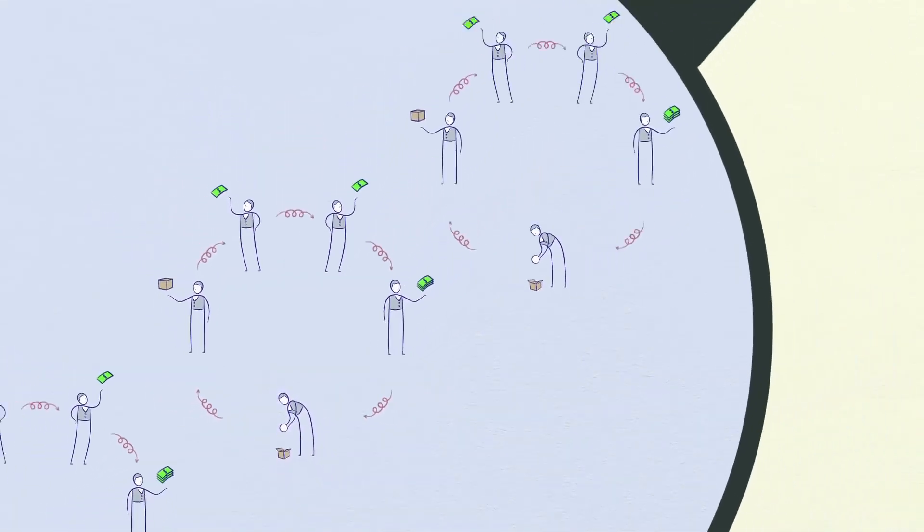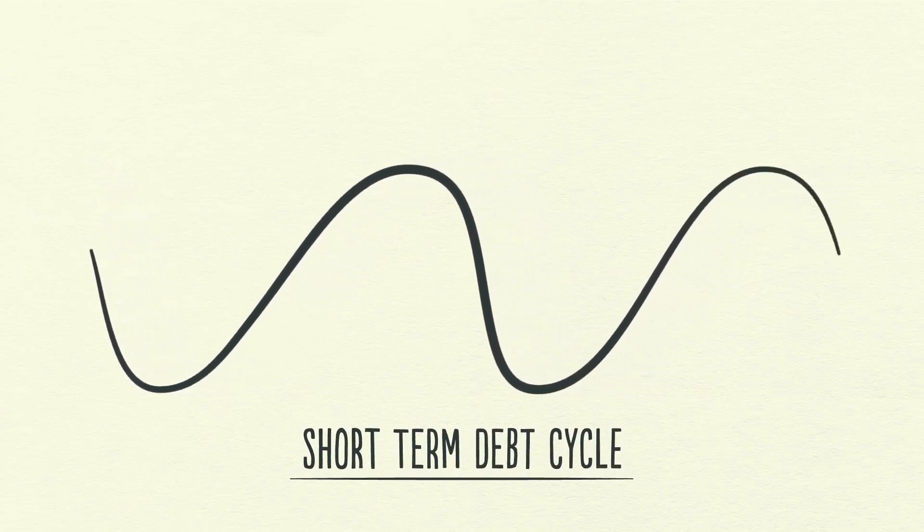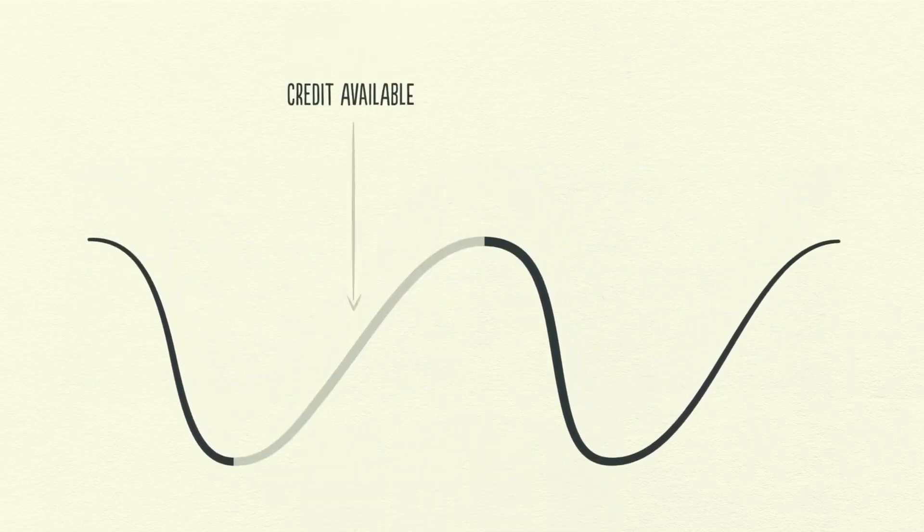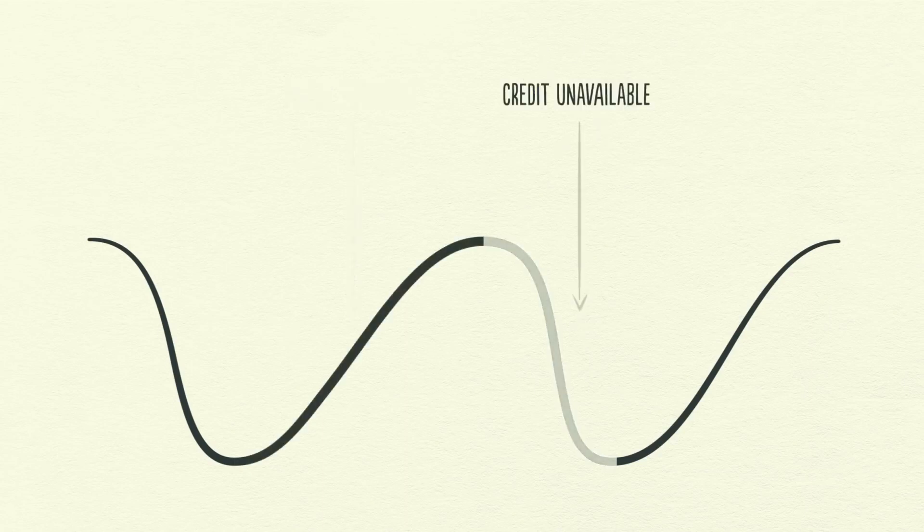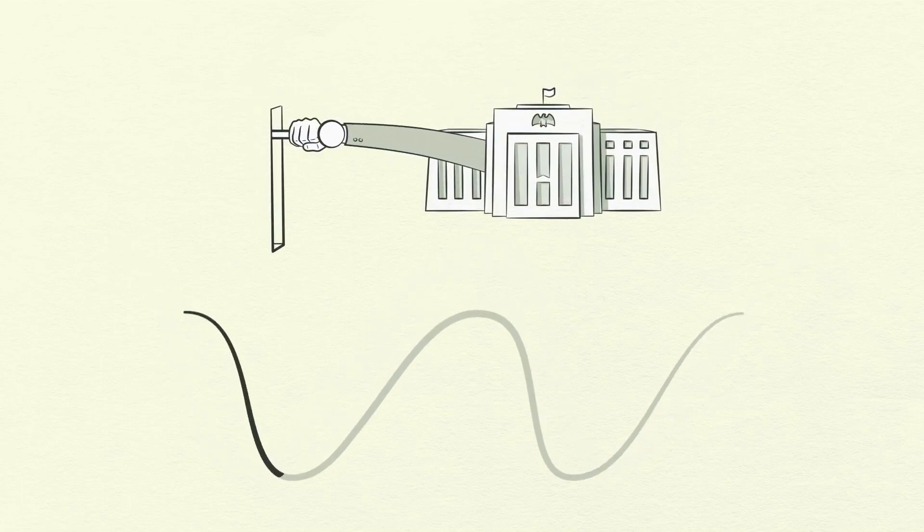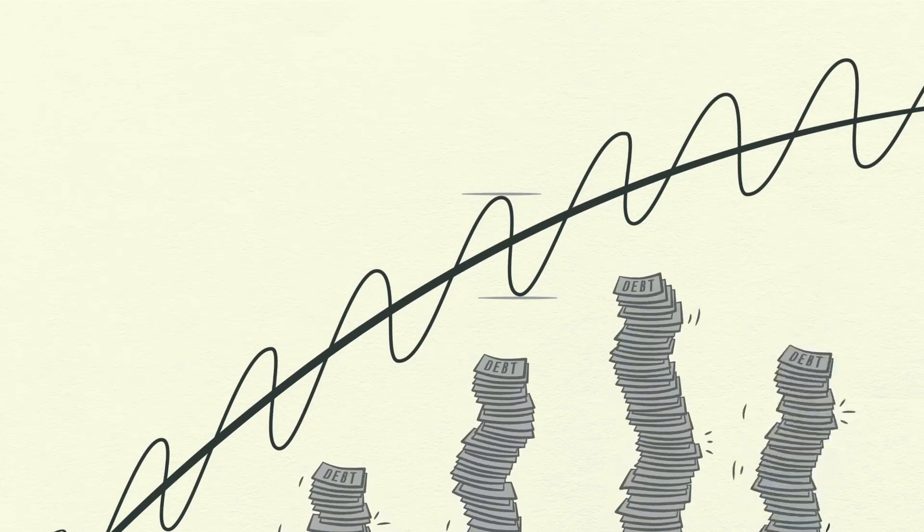As you can see, the economy works like a machine. In the short-term debt cycle, spending is constrained only by the willingness of lenders and borrowers to provide and receive credit. When credit is easily available, there's an economic expansion. When credit isn't easily available, there's a recession. And note that this cycle is controlled primarily by the central bank. The short-term debt cycle typically lasts five to eight years and happens over and over again for decades. But notice that the bottom and top of each cycle finish with more growth than the previous cycle and with more debt.